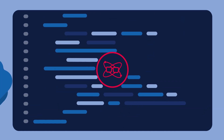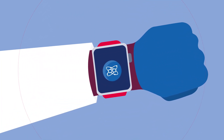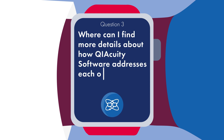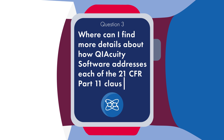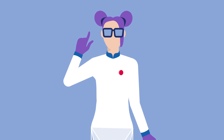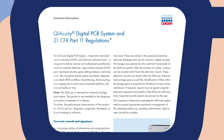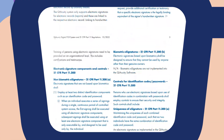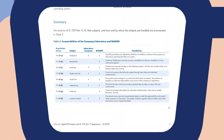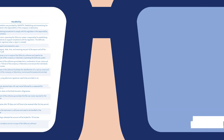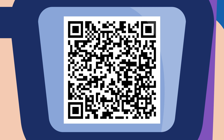Question 3: Where can I find more details about how KaiaQuity Software addresses each of the 21 CFR Part 11 clauses? A technical information document summarizes all details regarding the KaiaQuity Software and the corresponding 21 CFR Part 11 requirements. The document also includes an overview of responsibilities to fulfill individual needs. The file is downloadable from our website, or you can scan this QR code to get a copy.